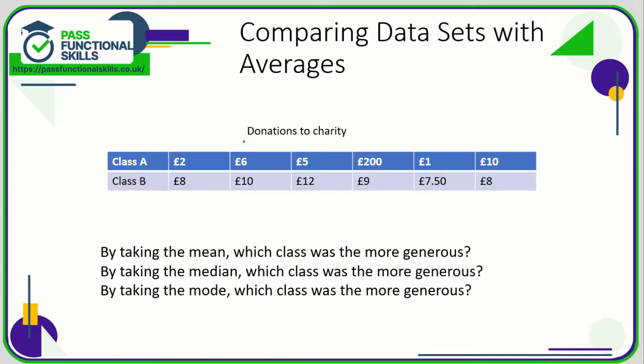Let's take a look at comparing data sets with averages. Here we've got a table showing donations from Class A and Class B — six donations from six separate students in each class. We're going to work out the mean donation. Remember that the mean is all the values added together and divided by the number of values, and we know there are six values for Class A and Class B.